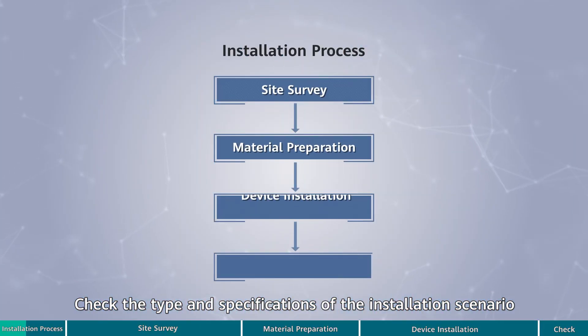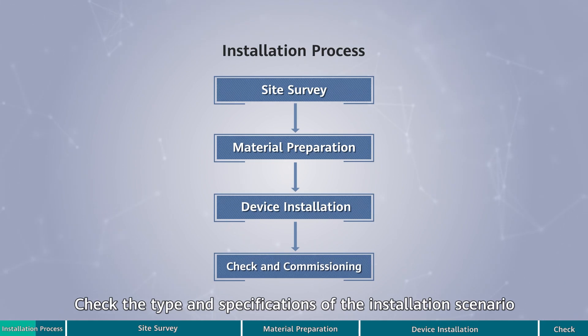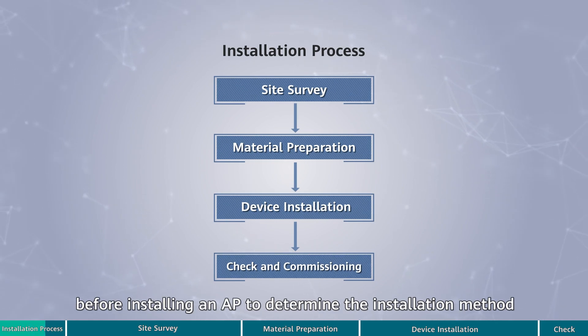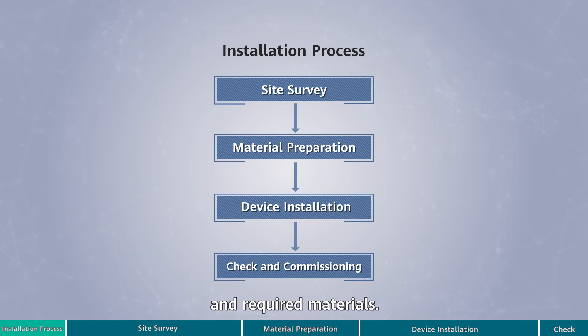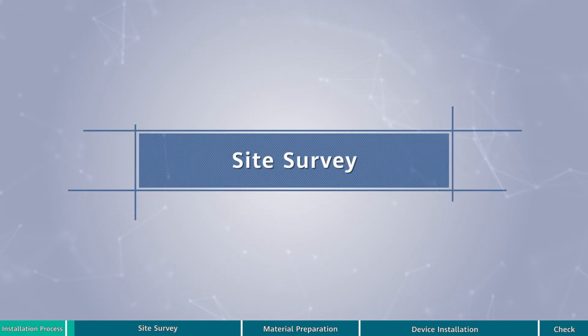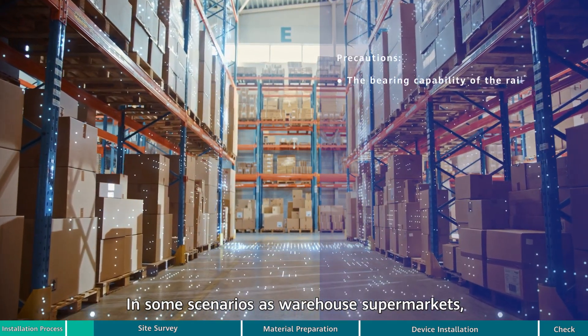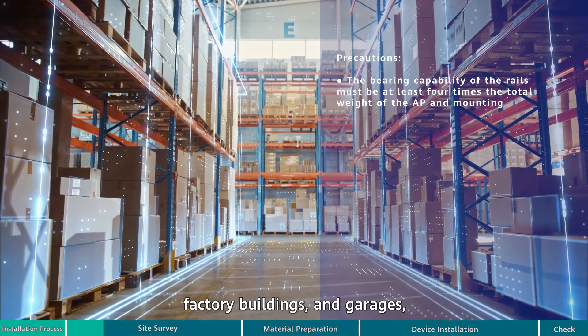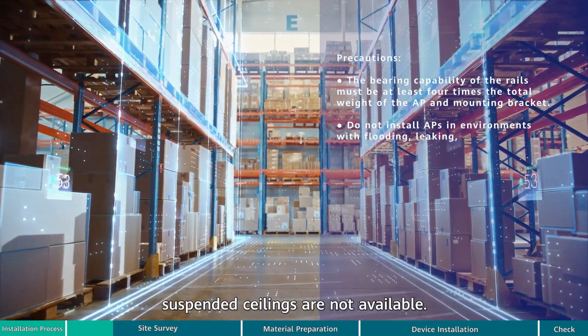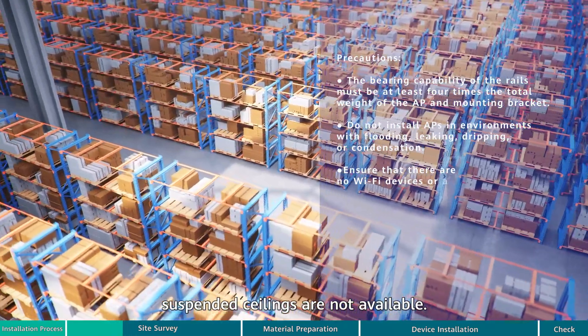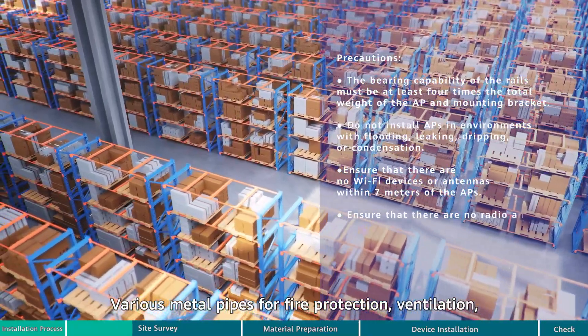Check the type and specifications of the installation scenario before installing an AP to determine the installation method and required materials. In some scenarios such as warehouses, supermarkets, factory buildings, and garages, suspended ceilings are not available. Various metal pipes for fire protection, ventilation, and wiring are deployed below the roof.